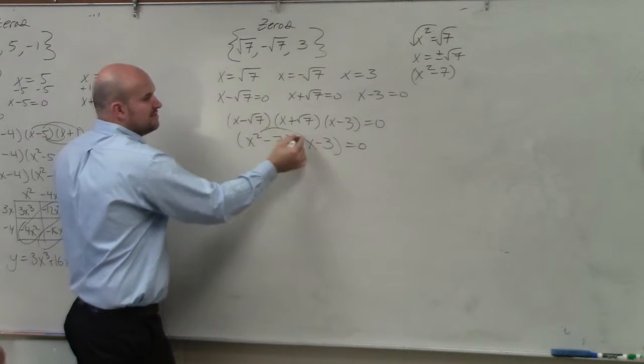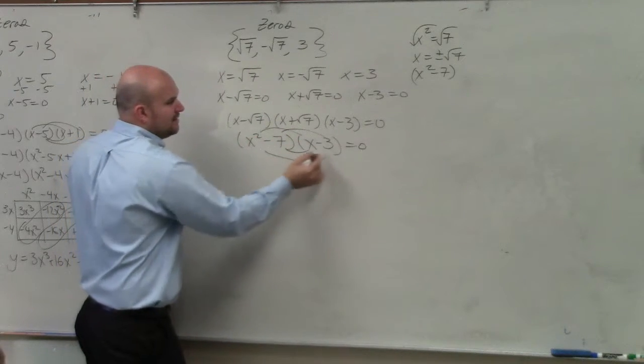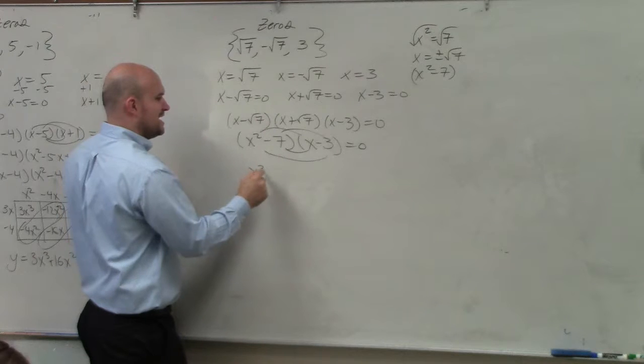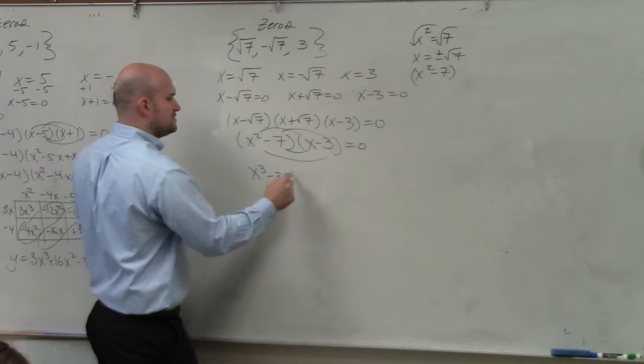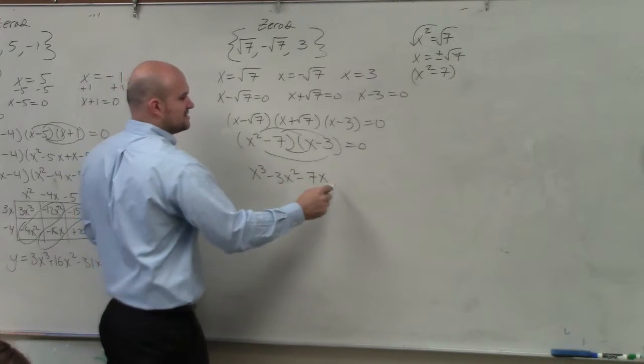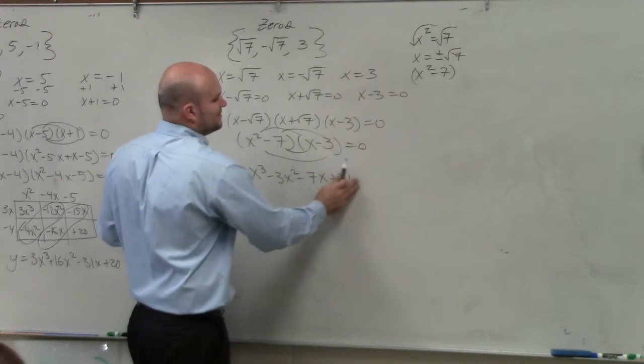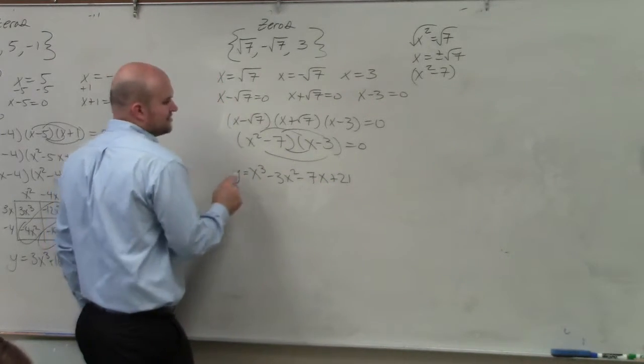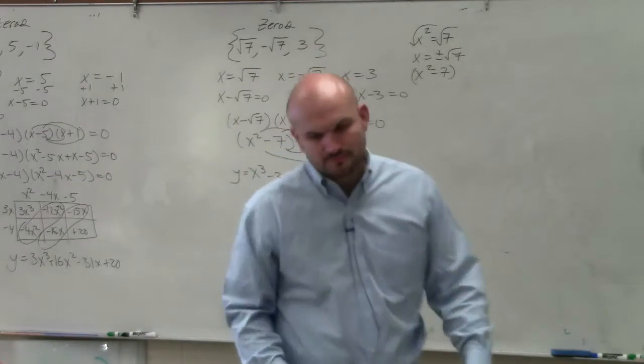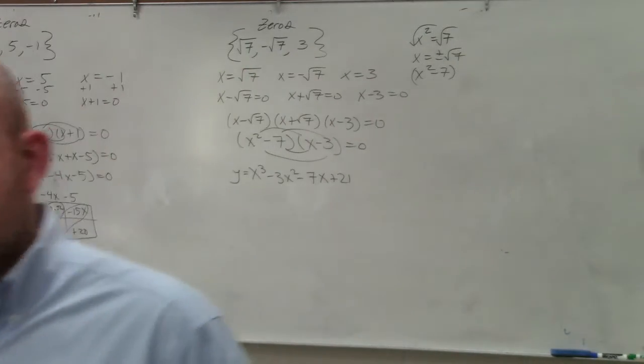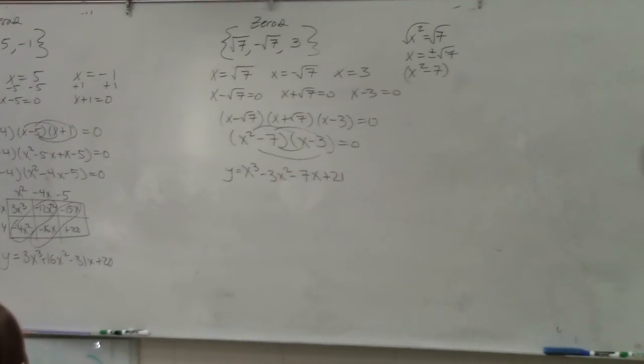Then again, we can use FOIL. Now, I'm going to do the math in my head. I'll just write the final answer. So I get x cubed minus 3x squared minus 7x plus 21 equals... You could set it equal to 0, but we're going to set it equal to y, because they're asking us for the function. And so, I'll just do it with that one. And you guys have a practice of each one of these.